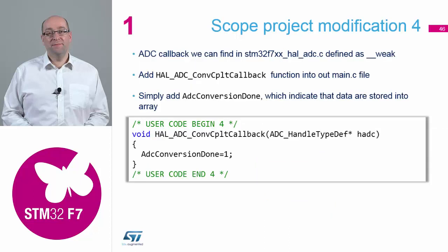So down in section four, user begin four, we will add a complete routine for the callback which will then enable our flag to say we've got a conversion complete. So that goes down in section number four, at around line 271 — something like that, quite a way down the code.